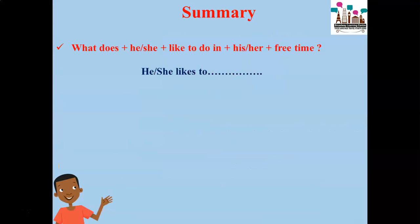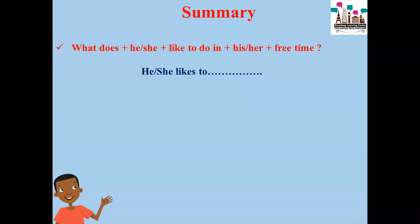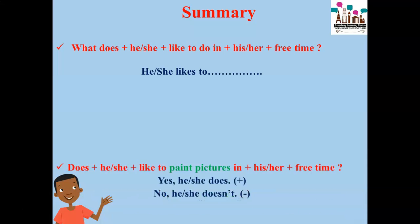Let's look at the summary. If we want to ask a WH question: 'What does he or she like to do in his or her free time?' The answer is: 'He likes to' or 'She likes to.' For yes or no questions, start with the auxiliary 'does' when the subject is 'he' or 'she': 'Does he or she like to paint pictures in his or her free time?' If we agree, say 'yes, he or she does.' If we don't agree, say 'no, he or she doesn't.'